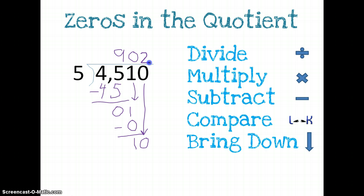This is why it's so important to know your math facts. 2 times 5 equals 10. Then I'm going to subtract. I'm going to get 0. Compare. 0 is smaller than 5. There's nothing left to bring down, and I have no remainder.